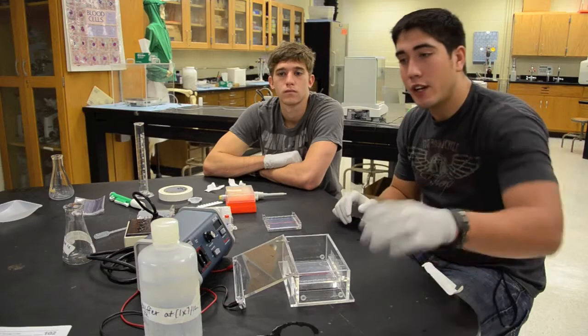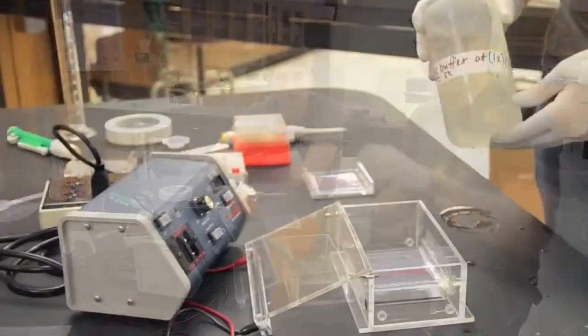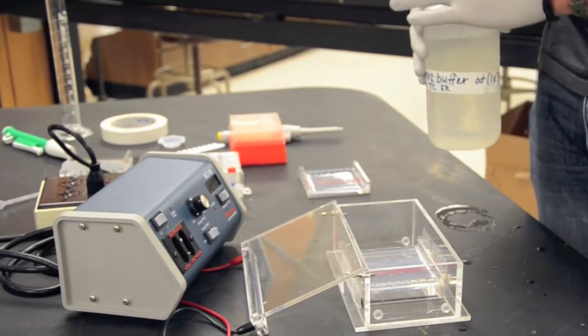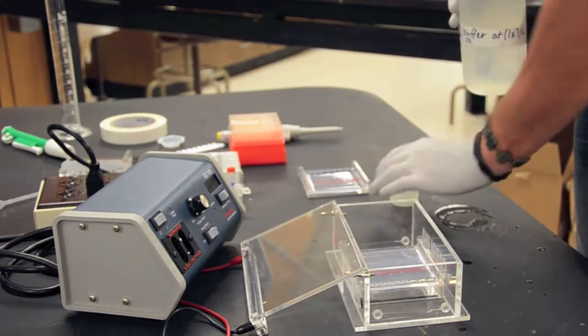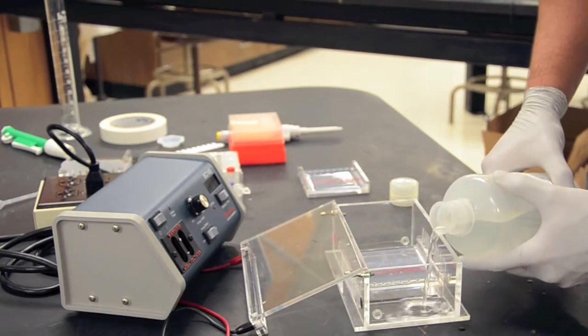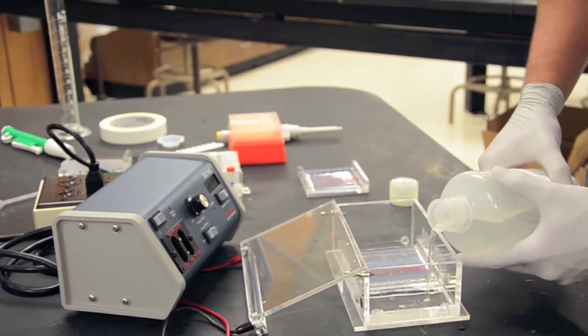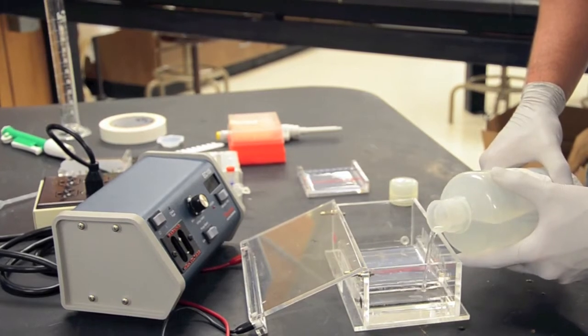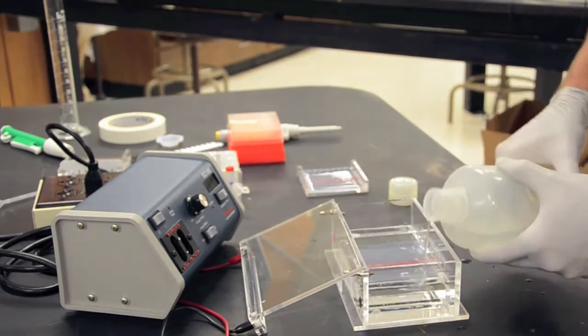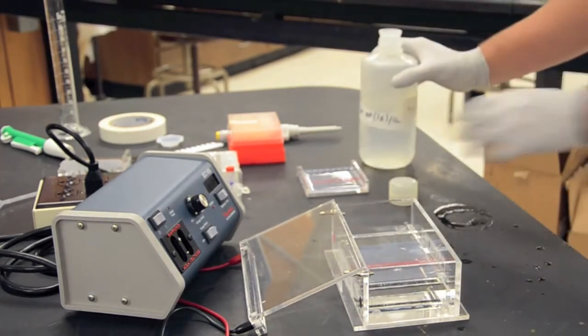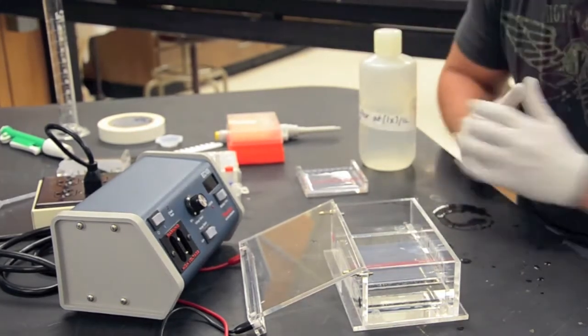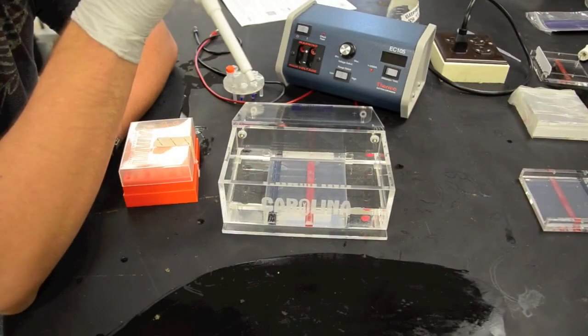Now your next step is going to be to load your buffer onto your bed. Okay so we have our buffer now and we are ready to load it into the chamber. Make sure the lid is down keeping with the sterile technique and we're just slowly and carefully going to add our buffer until it reaches the top notch of this gel bed making sure it covers the actual agarose gel as well.